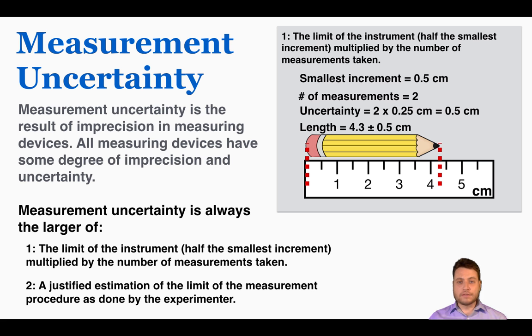As an example, if I recorded the length of this pencil, I would eyeball it and say it seems to be around 4.3 centimeters. So I would say that's 4.3 plus or minus 0.5 centimeters. So that's how we would record that based on the measurement uncertainty rules.